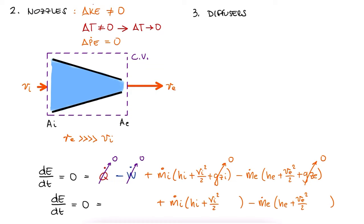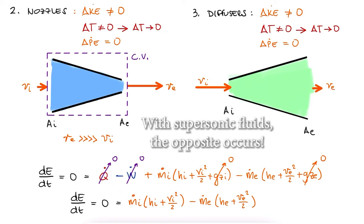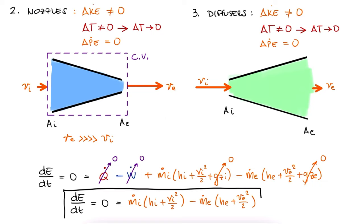This equation and assumptions are also true for diffusers, where all we're doing to the fluid is the complete opposite of a nozzle. Small inlet area moving to a large exit area to decrease fluid velocity, as long as it's not a supersonic fluid. And that's nozzles and diffusers.